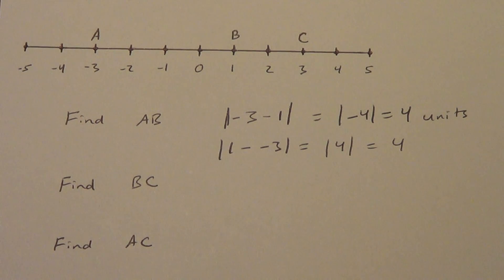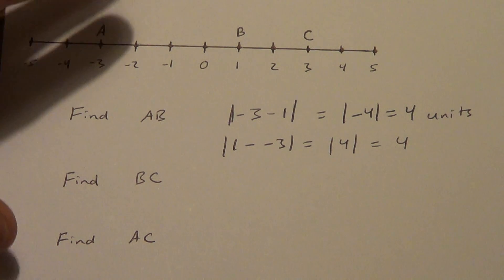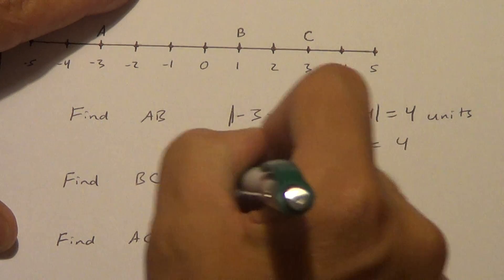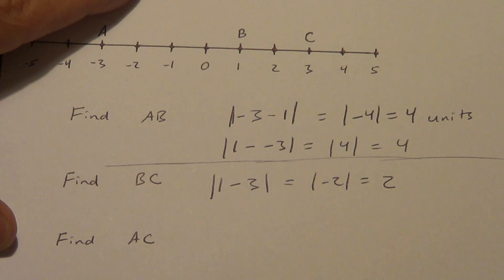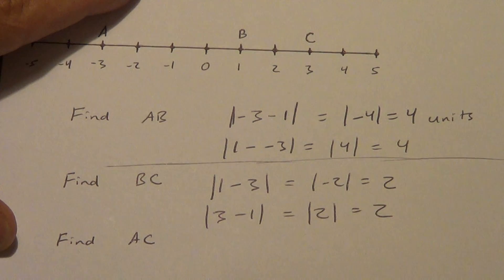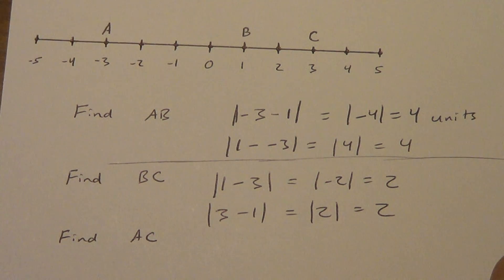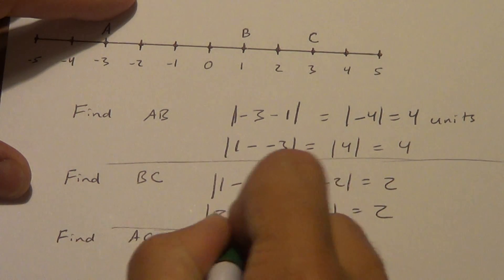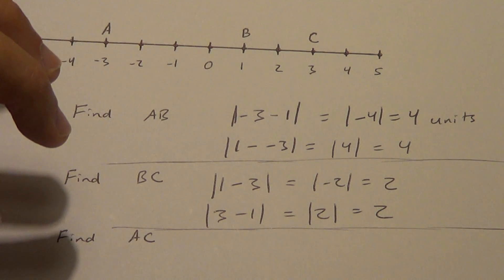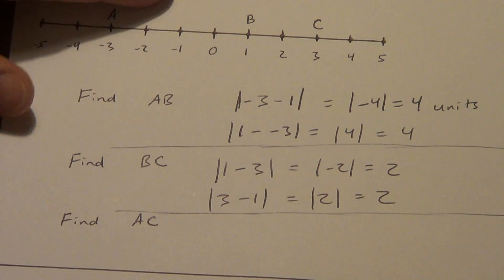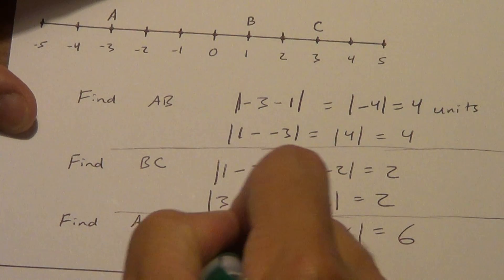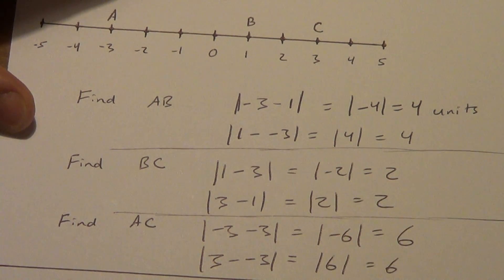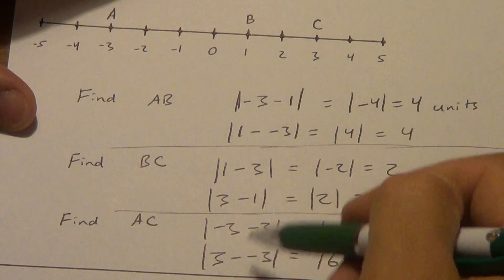For BC: the absolute value of 1 minus 3 equals the absolute value of negative 2, which is 2 units. Or 3 minus 1 is 2, absolute value is 2. For AC: the absolute value of negative 3 minus 3 equals the absolute value of negative 6, which is 6 units. Or 3 minus negative 3 is also 6. You only need to do one method for each — either way gives the same answer.